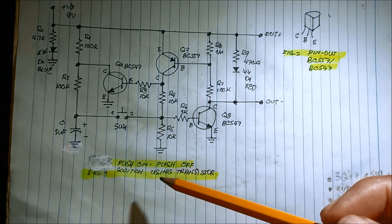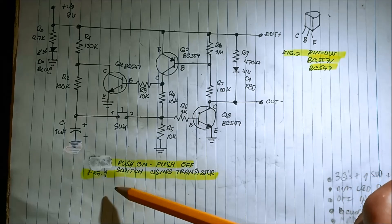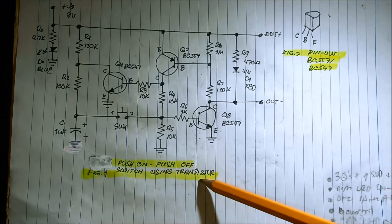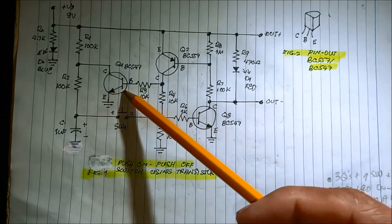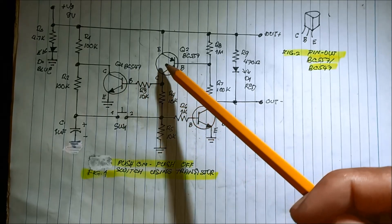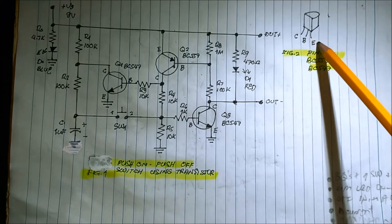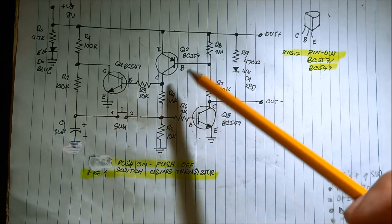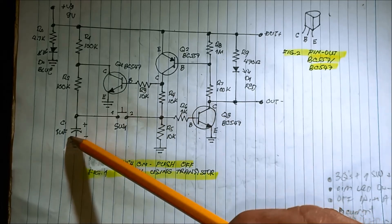We have the schematic diagram of our circuit — Figure 1: Push On Push Off Switch Using Transistors. We have three transistors: two NPN type BC547 and one PNP BC557. We are also using one switch, lots of resistors, and one capacitor.